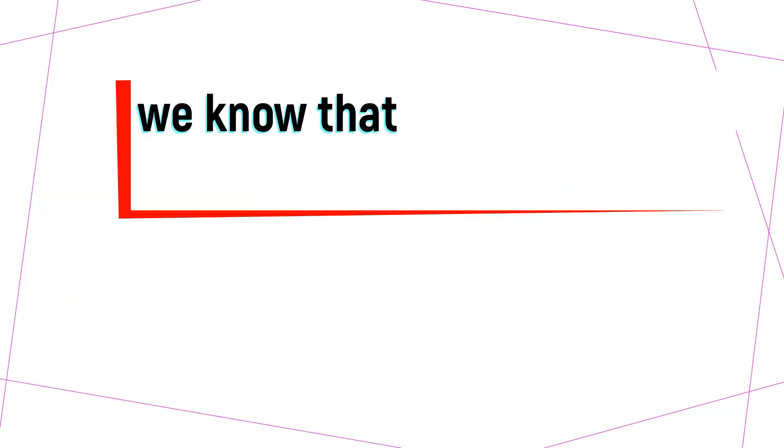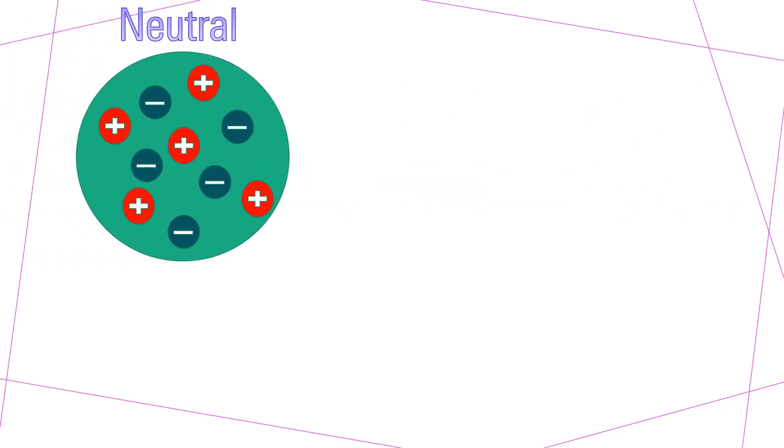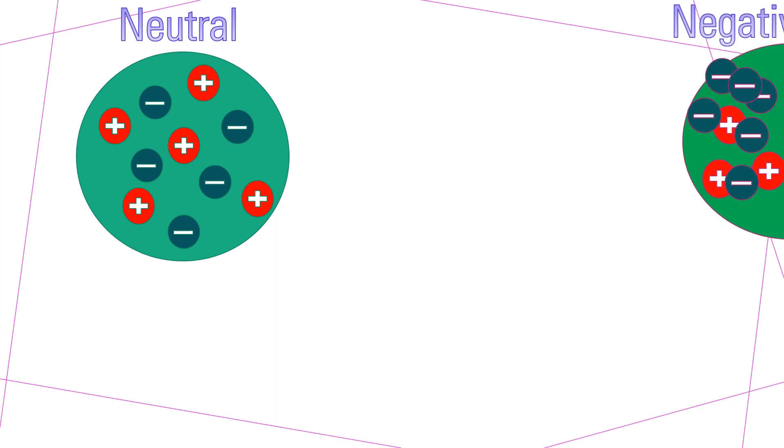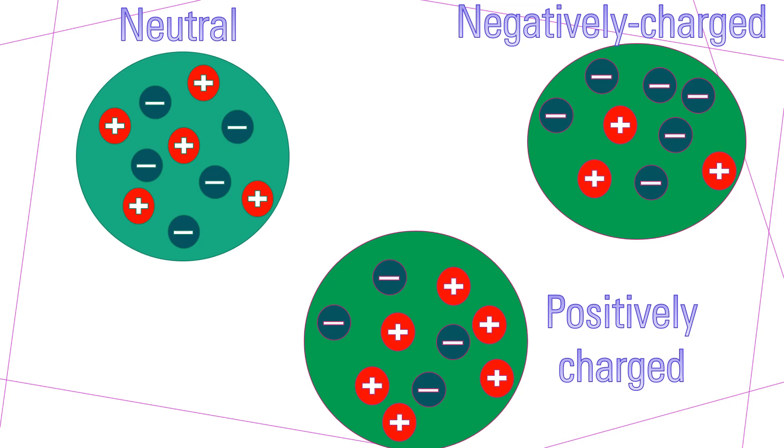We know that different objects have different charges. An object may be neutral, negatively charged, or positively charged.